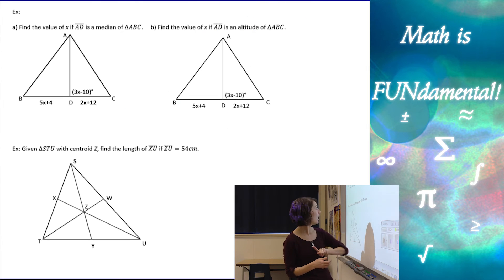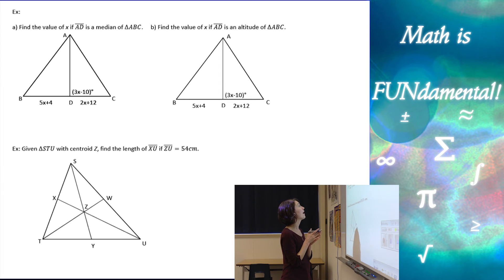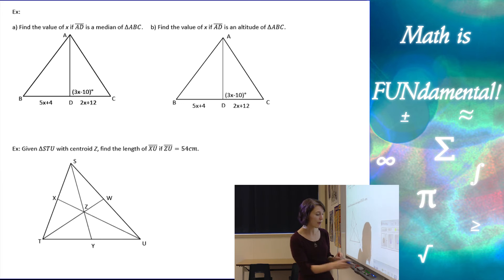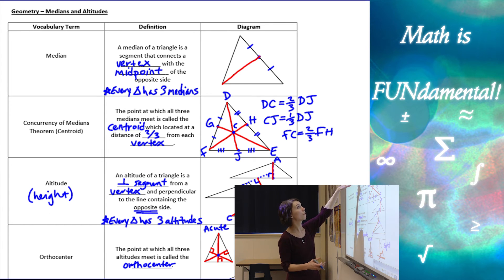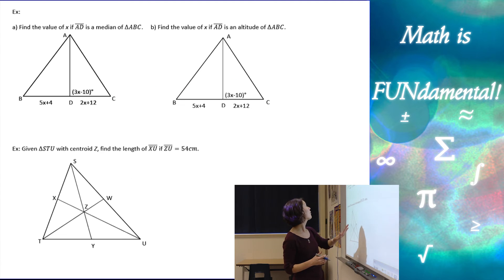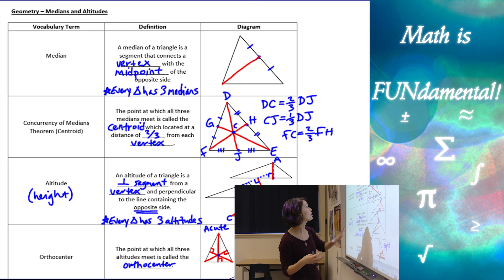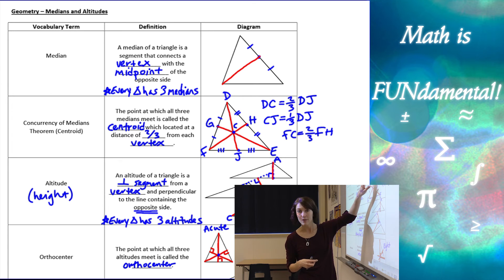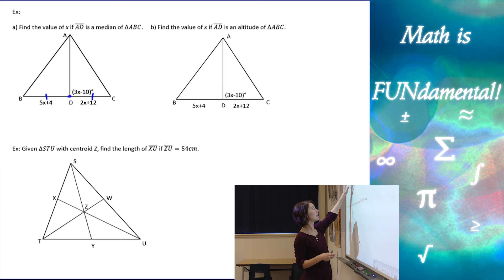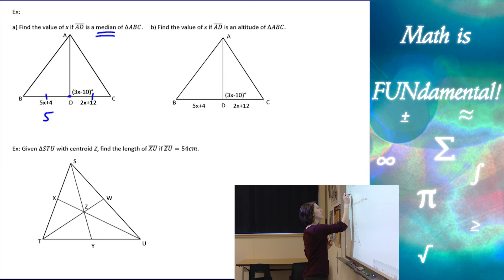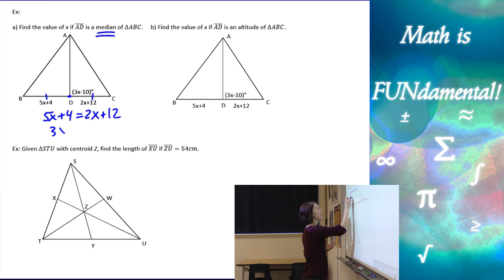Let's look at a couple of examples. Example number one: find the value of x if AD is a median of triangle ABC. Going back to our definition — a median goes from the vertex to the midpoint of the opposite side. So if it's a median, D is the midpoint of that side. Importantly, a median does not require a 90-degree angle, so we won't use the angle information given. We set up: 5x + 4 = 2x + 12, giving us 3x = 8, so x = 8/3.